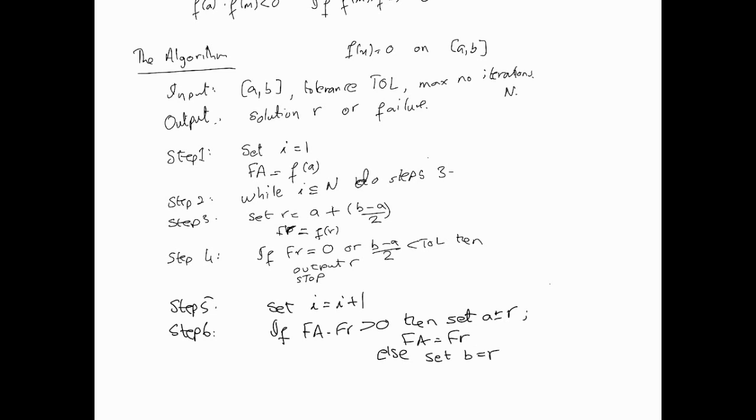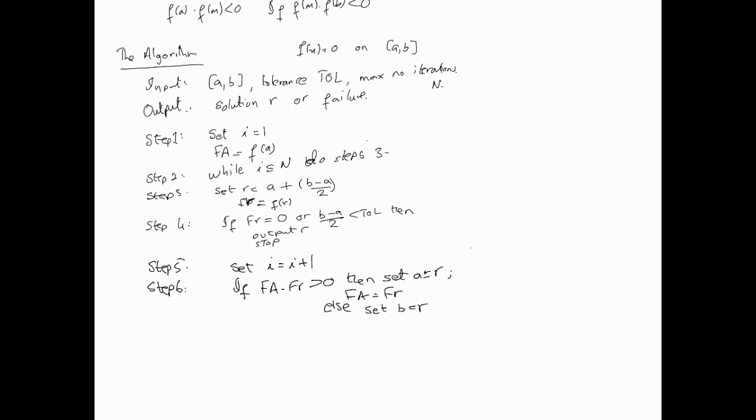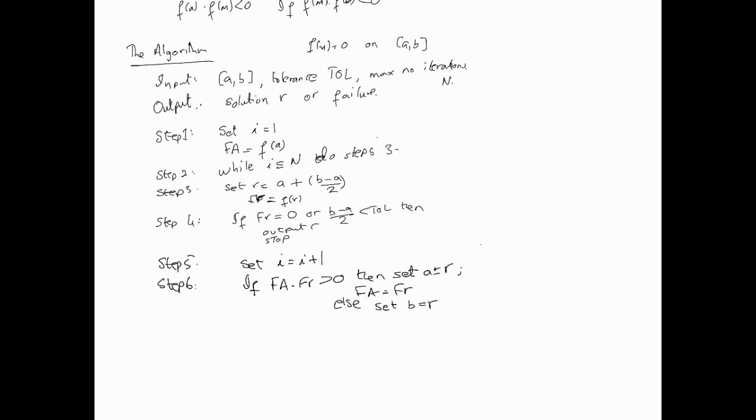And, our final step of this algorithm to stop it, step seven, we're going to say output, which could be method failed after N iterations. Method failed, it doesn't mean it doesn't work necessarily, it's just the number of iterations may not be enough. But, remember, this one is there for safety purposes only. It failed after N iterations, and we put a stop to the algorithm. And that's basically how this algorithm works.